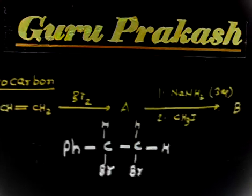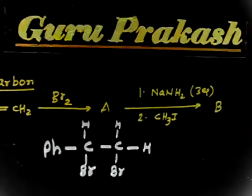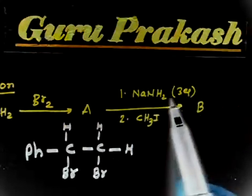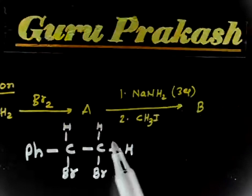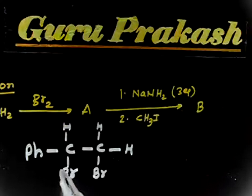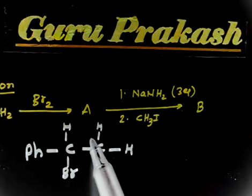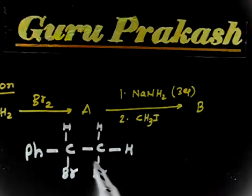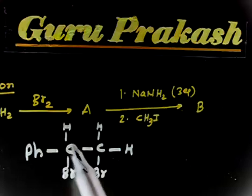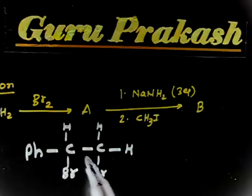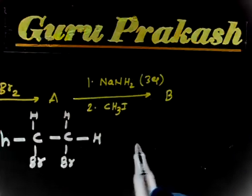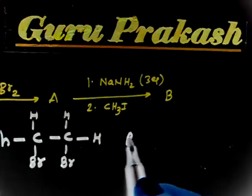Now, in the second step, if you take 3 equivalents of NaNH2: in the first step, HBr gets eliminated, so we will have one double bond. The next equivalent of NaNH2 will form another double bond here. So if you use 2 equivalents, you will have a triple bond.